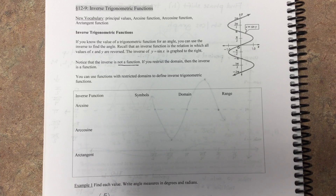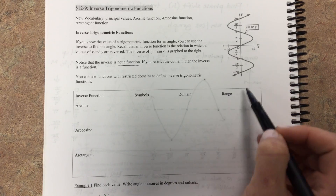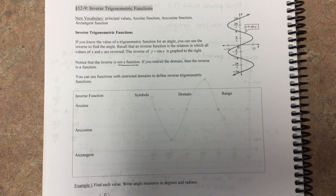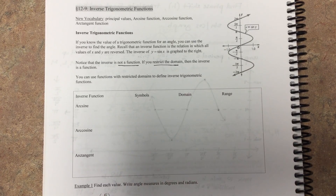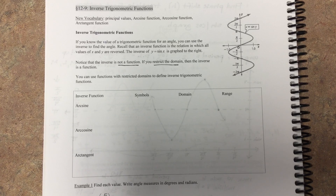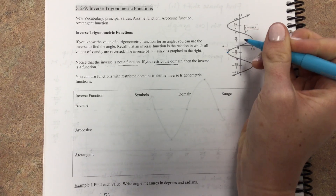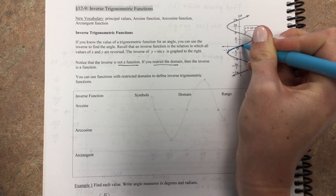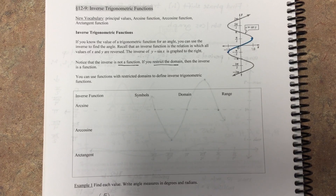Remember, a function has to pass the vertical line test, and this is far from passing it, because since the function is periodic, normal sine functions just repeat over and over again. The inverse function would also repeat, which means there would be an unlimited number of y values for each x value — making it not a function. So what we do is a domain restriction, which gets it down to a point where it is a function. We take just one segment of the sine function to make sure none of the y values repeat — every value gets covered once without repeating.